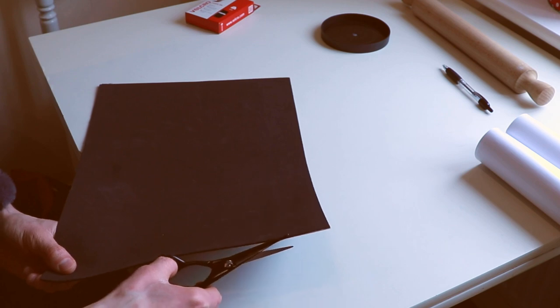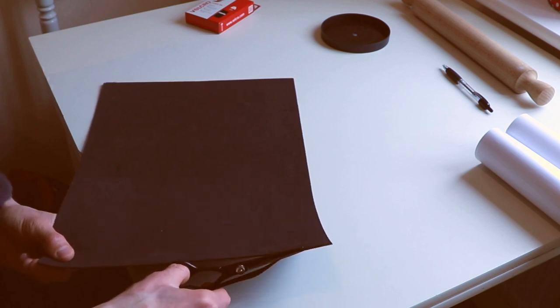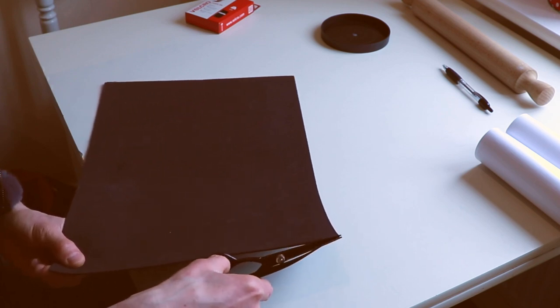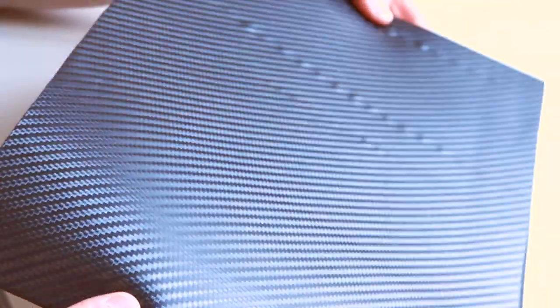I'm just cutting off the excess vinyl so it matches nicely with the foam. Now there we have the basic foam and vinyl all stuck together nicely. Got to get any bits off it.